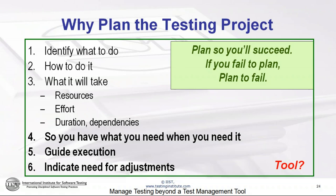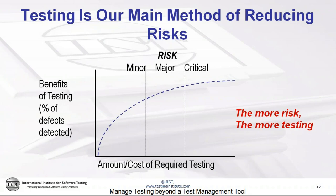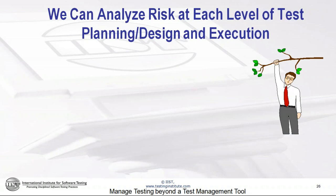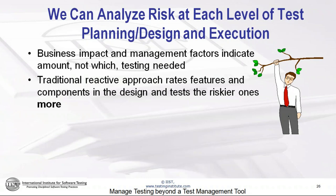Tools don't do planning — tools capture that information and maybe make it a little bit easier to work with, but the tool will not identify what to do or how to do it. With testing, what we're doing is reducing risks. There's a fundamental relationship between risk and testing: the more risk, the more testing we need to do. We can analyze risk at each level of planning, design, and execution — business impact, management risk — but these don't tell us which testing is needed.